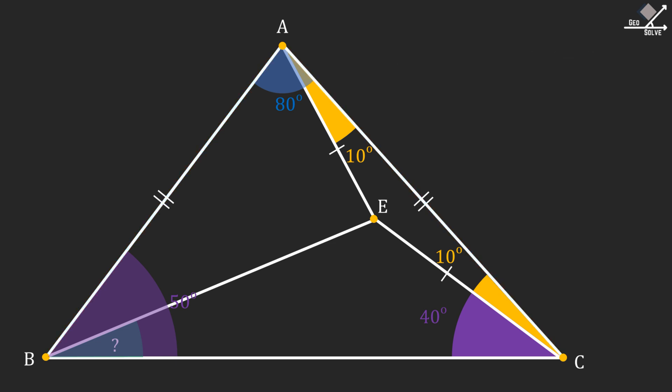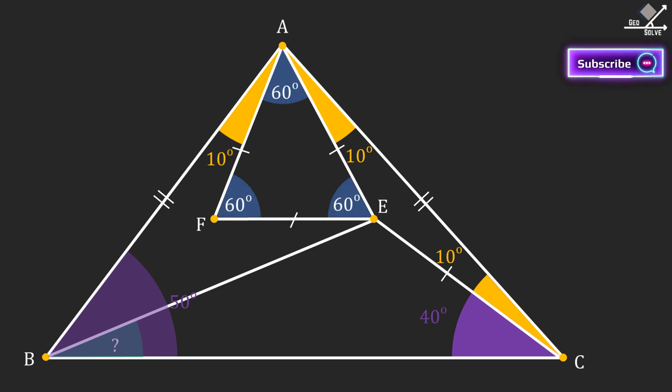We need to create something special to help us. Now, let's pick a point F such that the triangle AFE is an equilateral triangle. Since triangle AFE is an equilateral triangle, all its angles are 60 degrees.